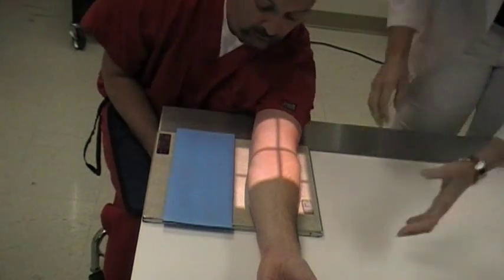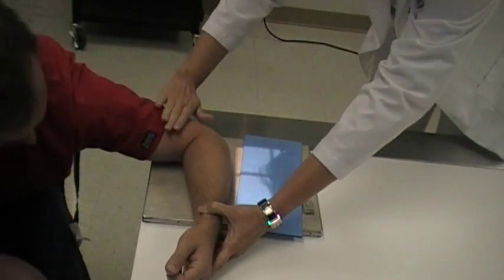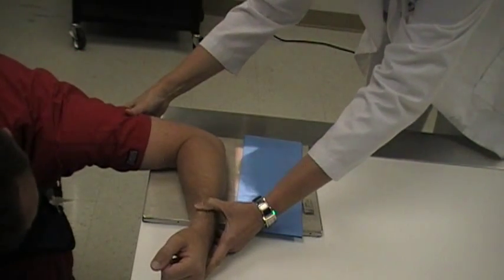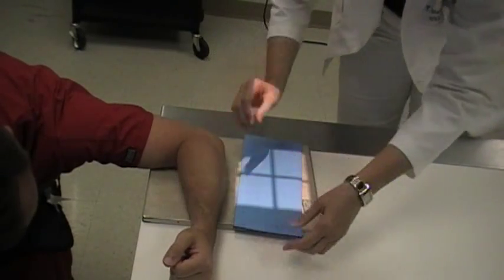Our lateral elbow will be, you'll bend the arm 90 degrees. Make sure the humerus is touching. Have a 90 degree bend, have the hand on its side.